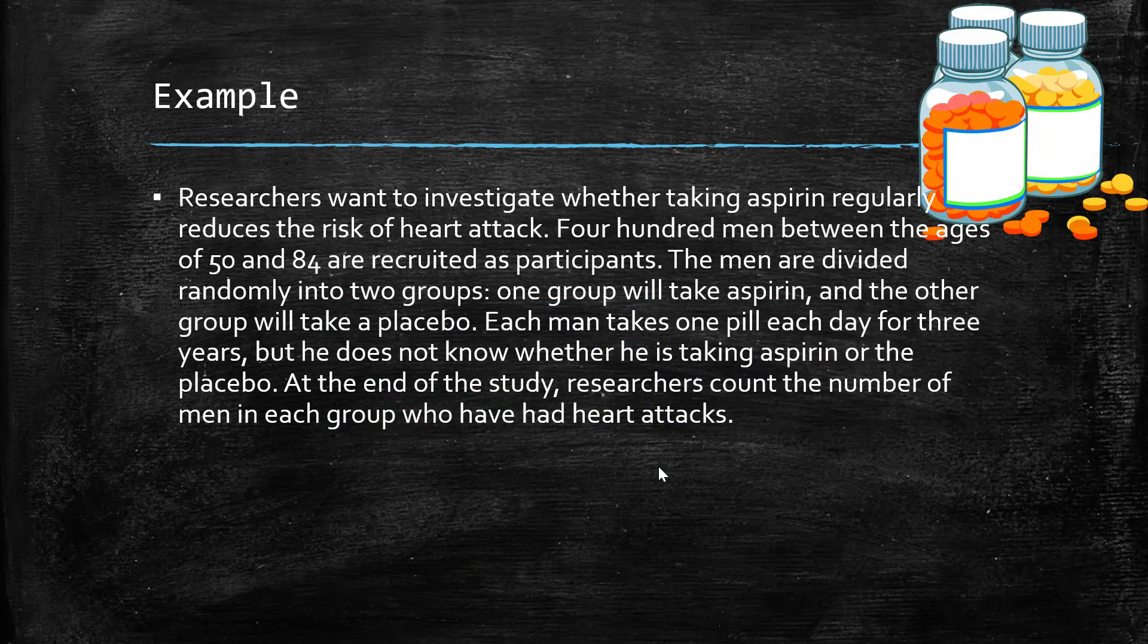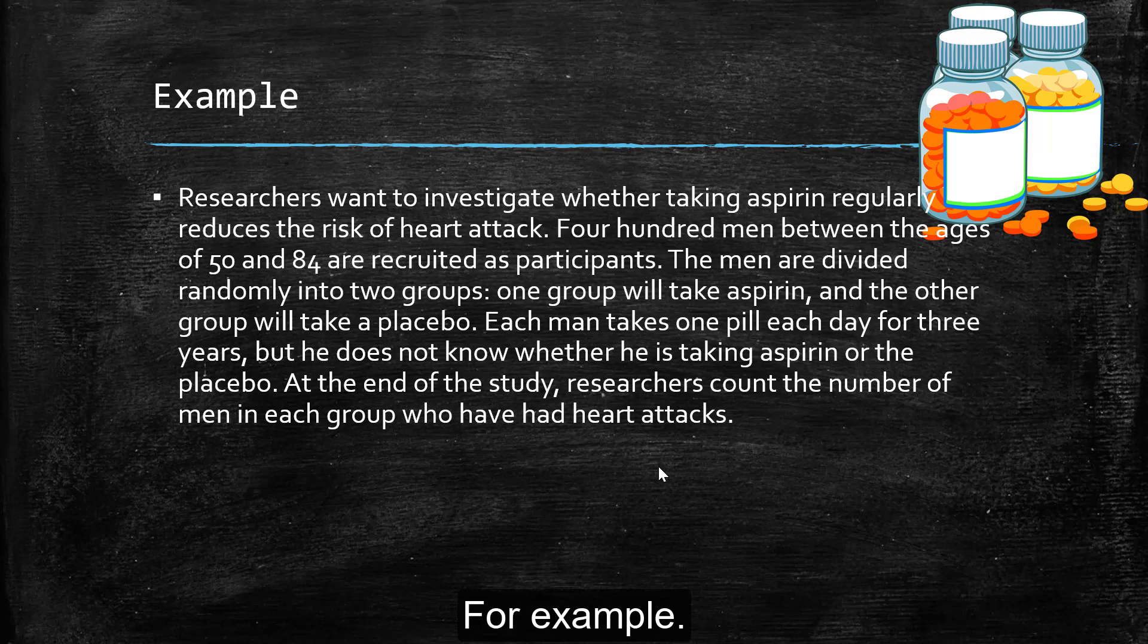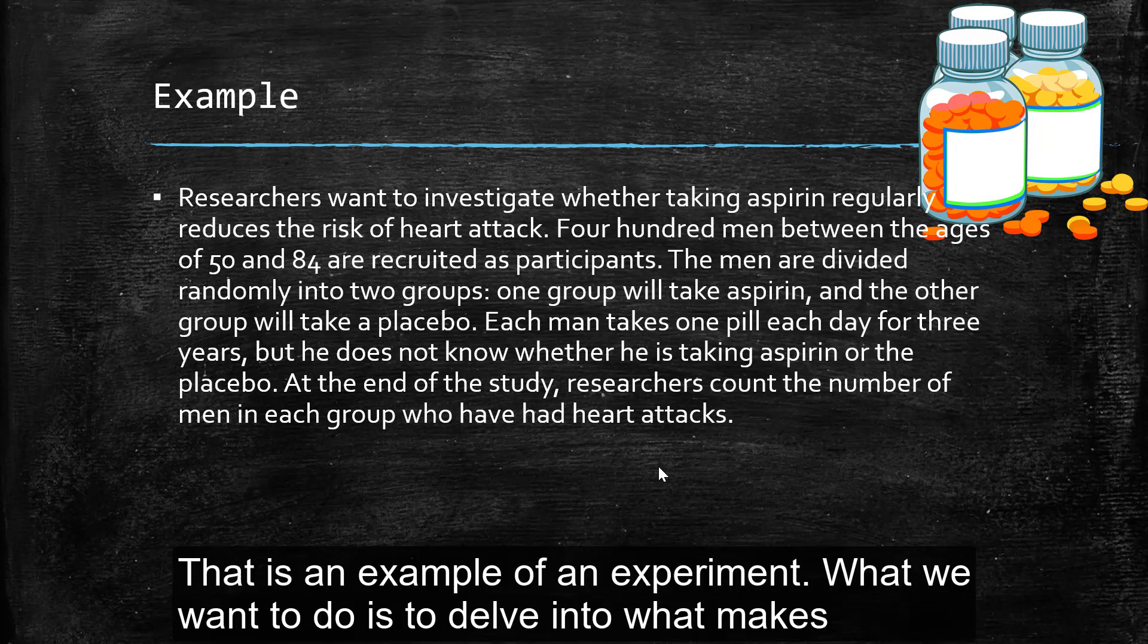For example, researchers want to investigate whether taking aspirin regularly reduces risk of heart attack. Four hundred men between the ages of 50 and 84 are recruited as participants. Men are divided randomly into two groups. One group takes aspirin, the other is a placebo. They take one pill for three days for three years and they don't know if it's placebo or aspirin. And at the end of the study, the researchers count the number of men in each group who have had heart attacks. So that is an example again of an experiment.